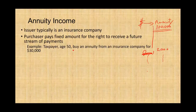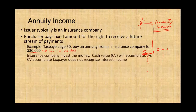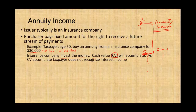Let's assume a taxpayer, age 50, buys an annuity from an insurance company for $30,000. We call this the investment — this is the cost of your investment. You paid $30,000. The insurance company will invest this money; obviously that's what they do, they don't sit on it. Cash value will accumulate — abbreviated as CV. As cash value accumulates, the taxpayer does not recognize interest income. When it's accumulating return, you don't have any interest income until you take it out.